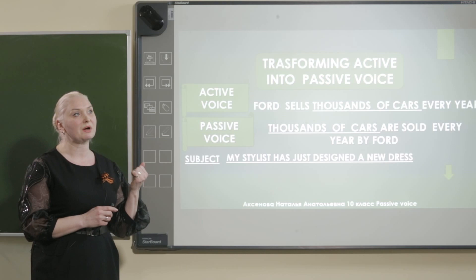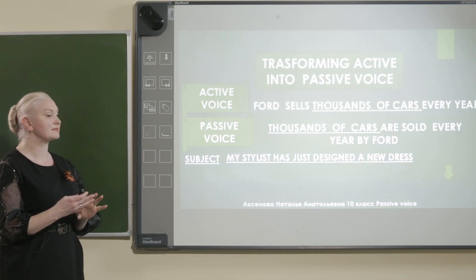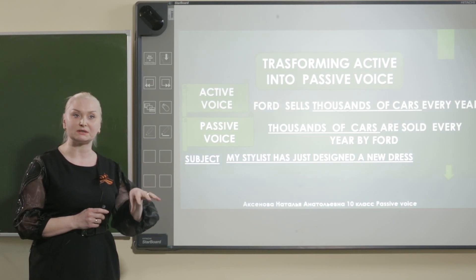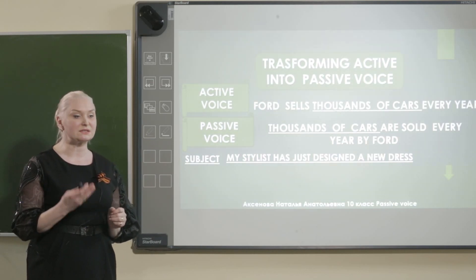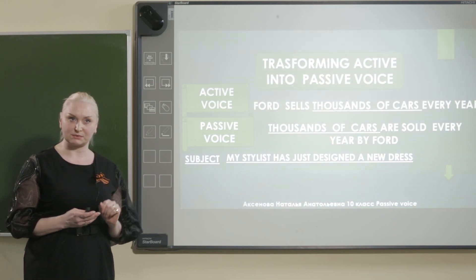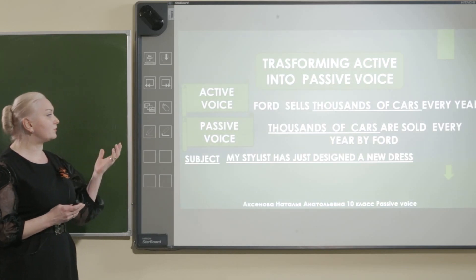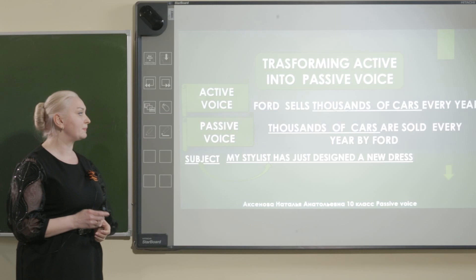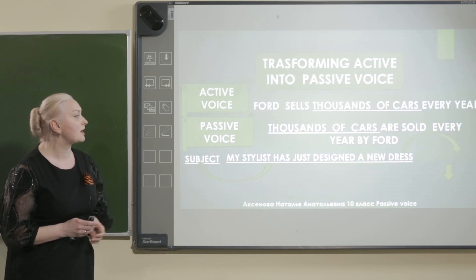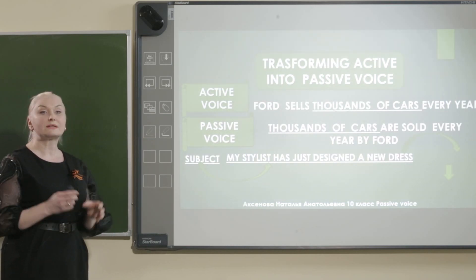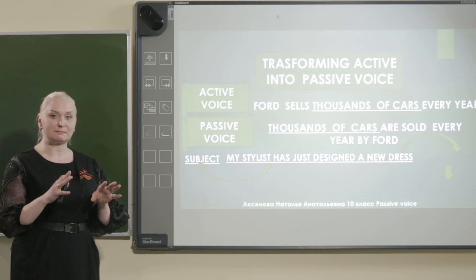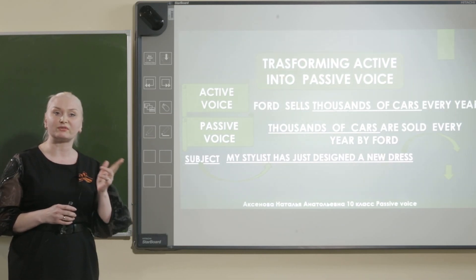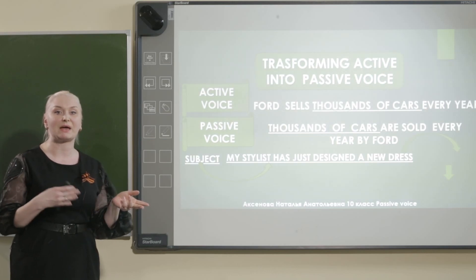Now when we are going to speak about transforming from active into passive. Действительный залог — когда действие совершает объект, а страдательный залог — когда действие совершается над чем-то. For example: it sells thousands of cars every year, or thousands of cars are sold every year. The idea is the same, but you can say in both variants — in active voice and passive.